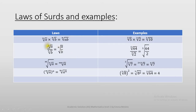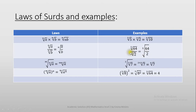The second law says the nth root of a divided by the nth root of b is equals to the nth root of a over b. We have the same root, which is nth root, and then we divide what's inside the roots. For example, the fifth root of 64 divided by the fifth root of 2 is equals to the fifth root of 64 divided by 2.